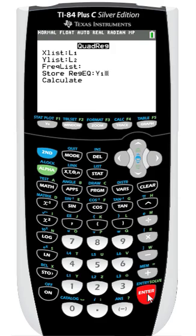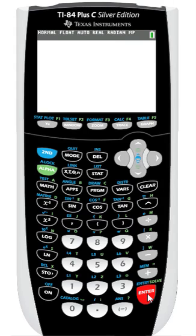Now I'm just going to press enter to highlight calculate and press enter again to calculate my regression. You can see that the form ax squared plus bx plus c will fit my data best when a equals 1.5, b equals 6.1, and c equals 9.